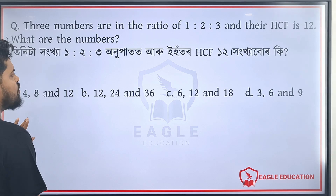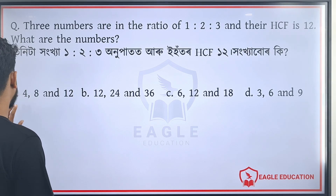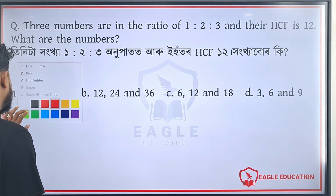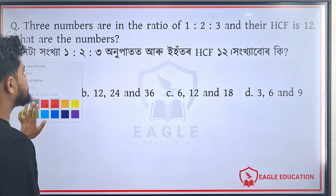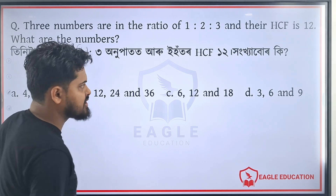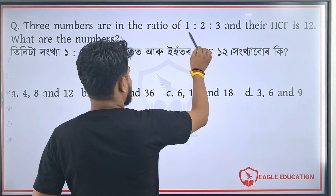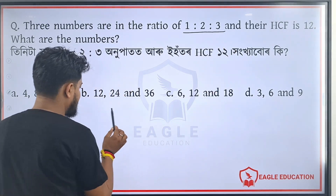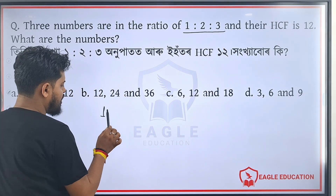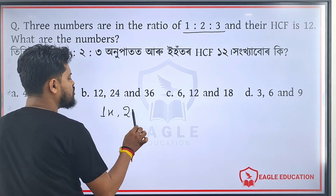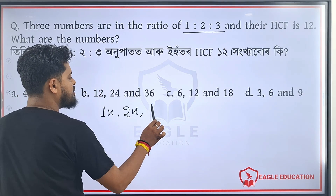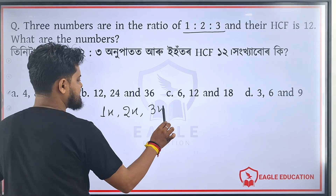Three numbers are in the ratio of 1 to 2 to 3. If you have three numbers in ratio 1 to 2 to 3, you will represent them as 1x, 2x, and 3x.